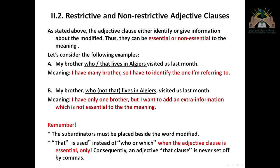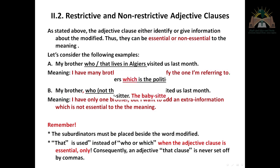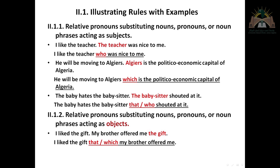Subordinators that initiate adjective clauses must be close and beside the word they modify. So 'my brother who' — the subordinator must be closed and beside the word modified in the main clause. Also: 'I like the teacher who' — 'teacher' is modified, 'who' initiates the adjective clause, the subordinator initiating the adjective clause, always next — you have to be close to each other.